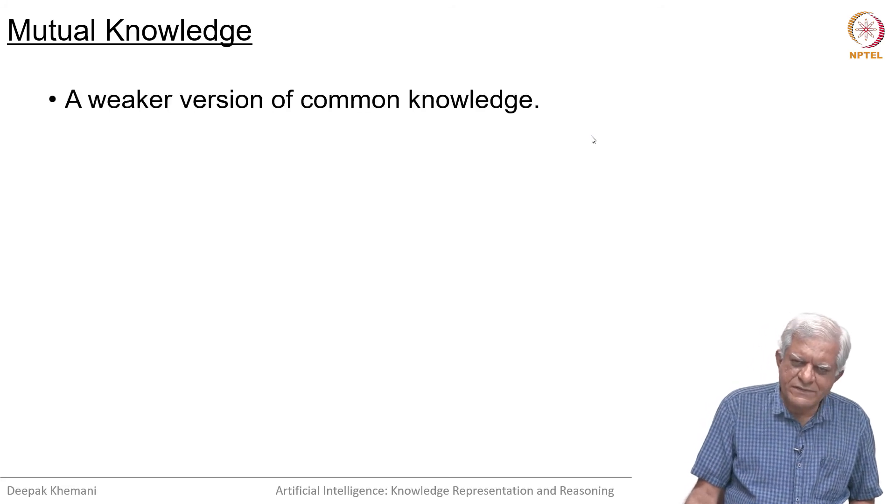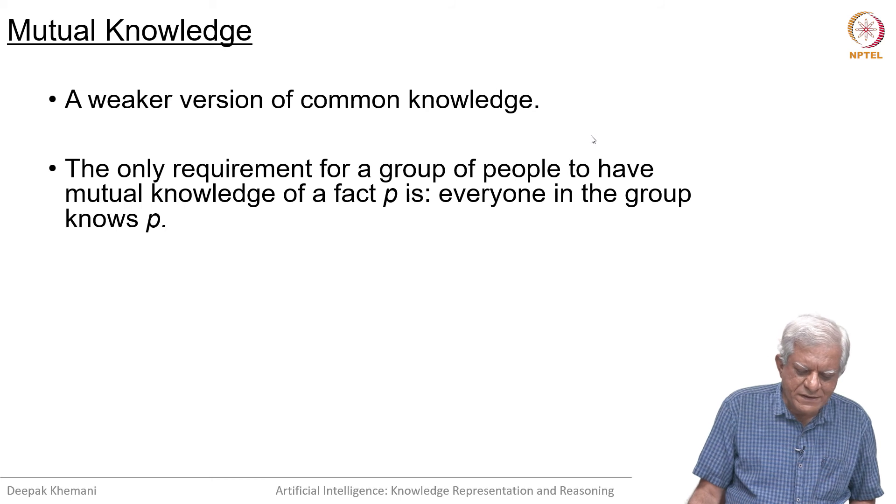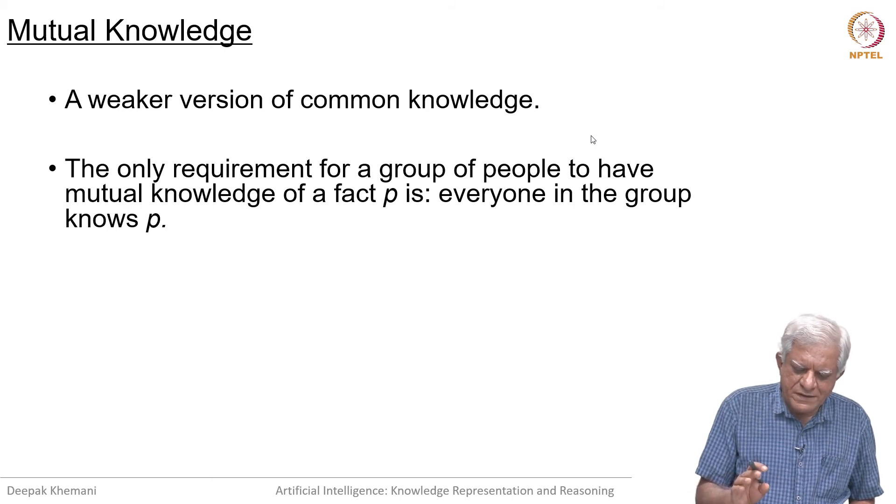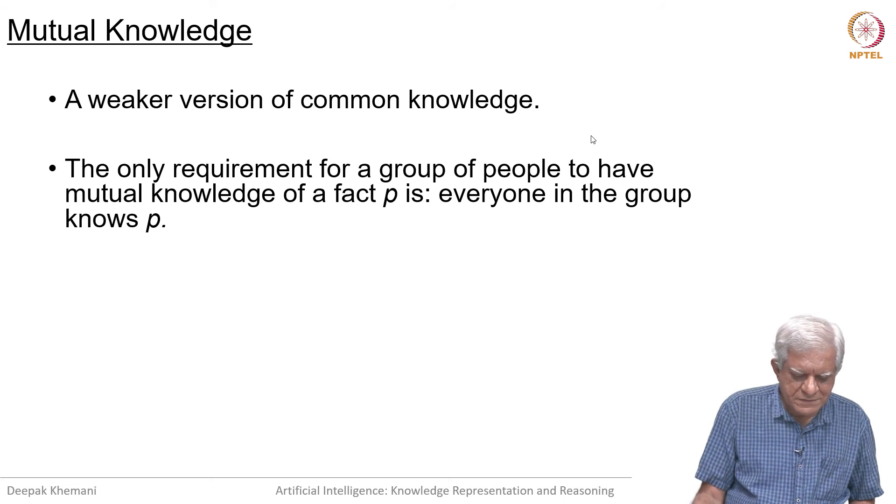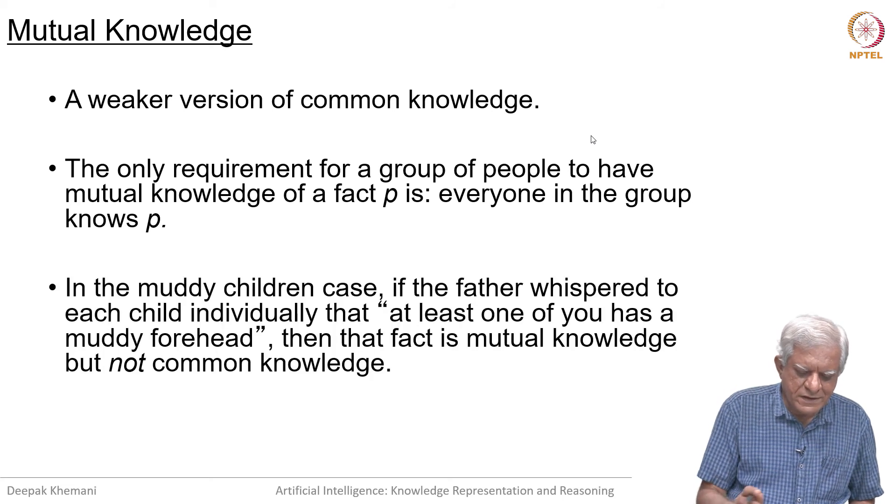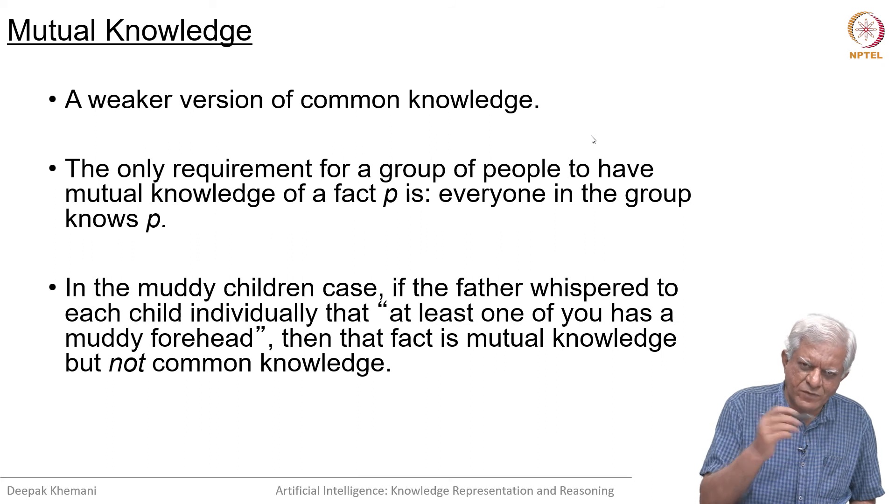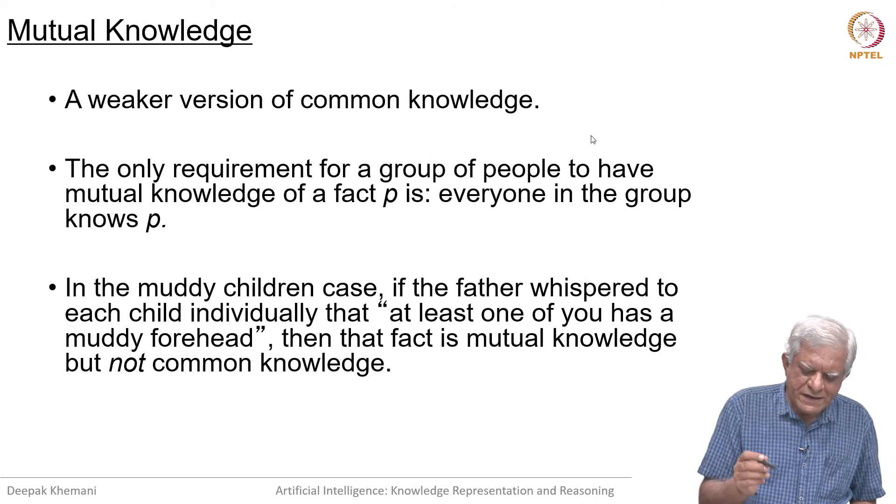There is also something called mutual knowledge, and it is a weaker notion than common knowledge. It says that everybody knows P, but everybody does not know that everyone knows P. As long as everybody knows P, we say we have mutual knowledge.